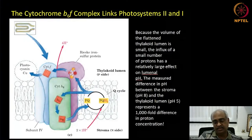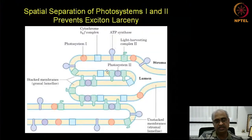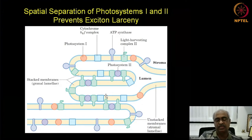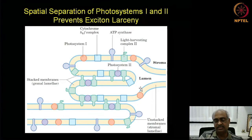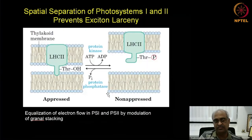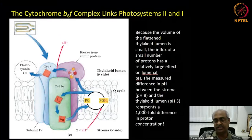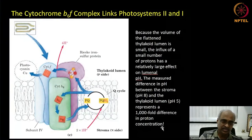This space — the thylakoid lumen — is extremely narrow compared to the stromal side. As a result, when protons are pumped into this space by the complex, the pH gradient is really about 1000-fold. The proton concentration inside the thylakoid lumen is so high: pH 5 inside and pH 8 outside in the stroma. Therefore there is a 1000-fold difference in proton concentration, sufficient for ATP synthesis.